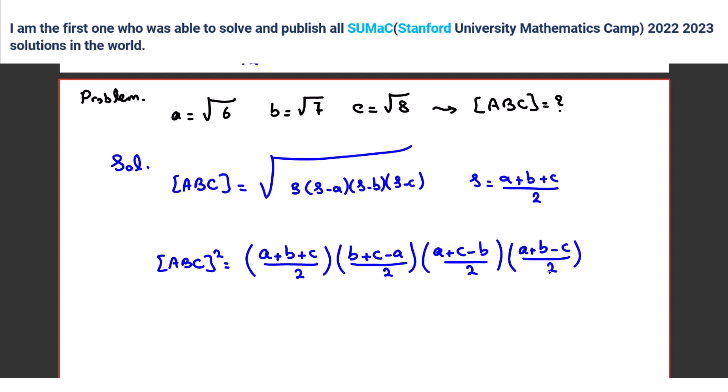Now, if you want to get rid of the denominators, we should do what? Multiply by 16. Then this times this is what squared minus what squared? Oh, B plus C squared minus A squared. What about next two terms?